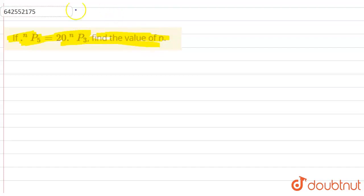So we have to find the value of N in this. First of all, it is given NP5 is equal to 20 into NP3. If I open both the permutations value,